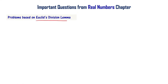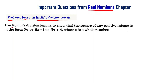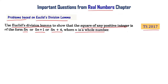Euclid's division lemma is one of the important topics in the real numbers chapter. Let's look at problems based on Euclid's division lemma. Use Euclid's division lemma to show that the square of any positive integer is of the form 5n or 5n plus 1 or 5n plus 4, where n is a whole number. This is a Telangana final exam 2017 question.